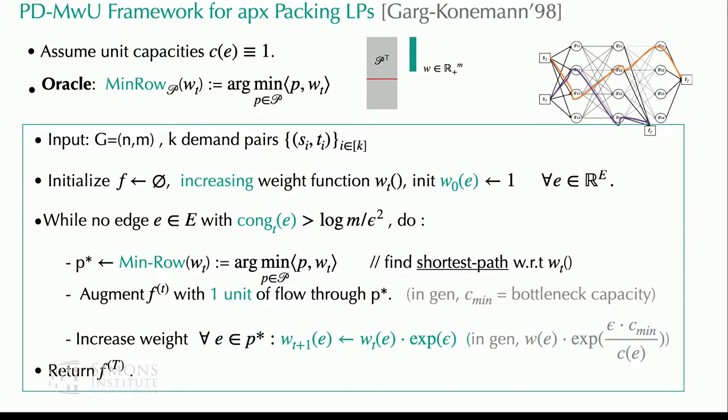When you return the final flow, you scale it down by something. The algorithm returns the final flow scaled by the maximum congestion in order to respect edge capacities.